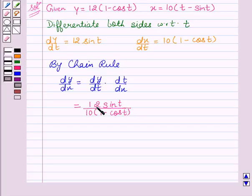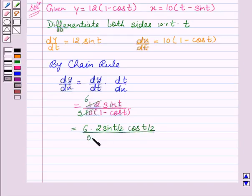Now, on cancelling 12 and 10, we get 6 and 5, and further we will substitute the value of sin t which is 2 sin t by 2 cos t by 2 upon 5 into 2 sin square t by 2.